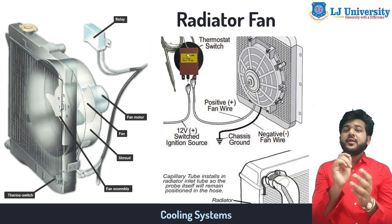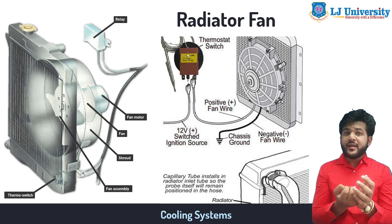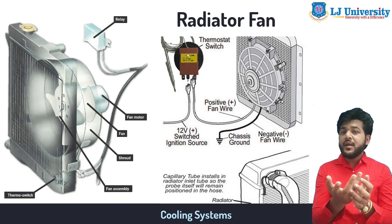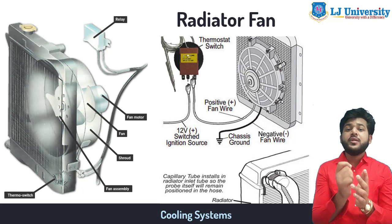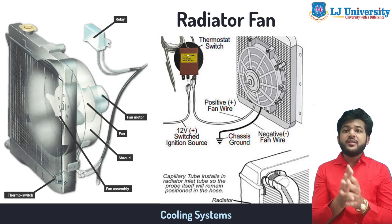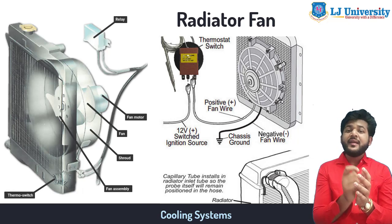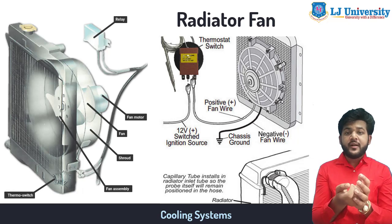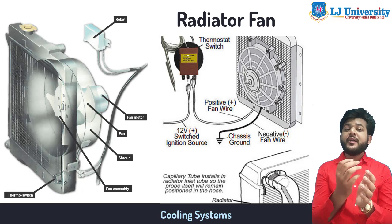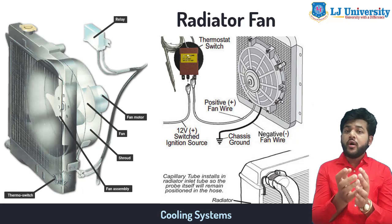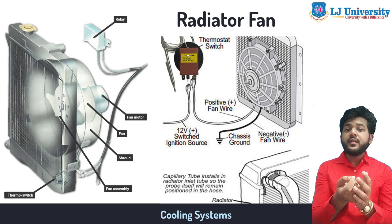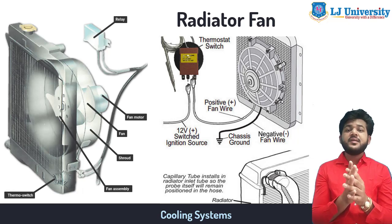The radiator fan draws air toward the radiator to help in the cooling process. It has four or more blades and spins rapidly to provide sufficient air to cool the engine. It is usually mounted between the radiator and the engine. Some cars have an additional fan in front of the radiator to draw more cool air, especially in hot conditions when the vehicle isn't moving fast and little cool air reaches the radiator.